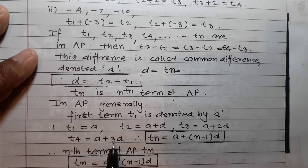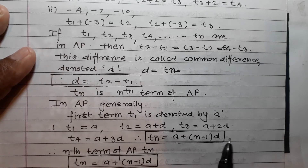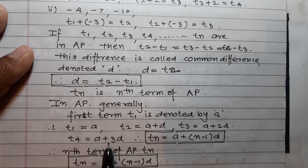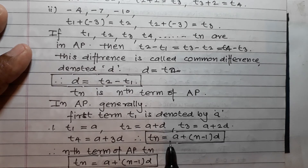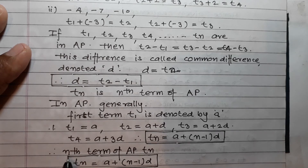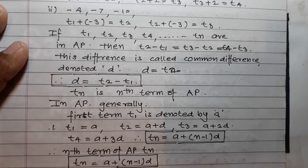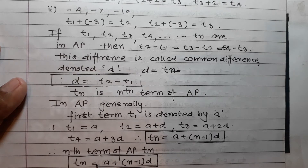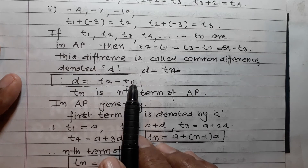Following this pattern, tn = a + (n-1)d. Therefore the nth term of an AP is: tn = a + (n-1) × d. This is the formula for finding the nth term. Also remember: d = t2 - t1. These are very important formulas.